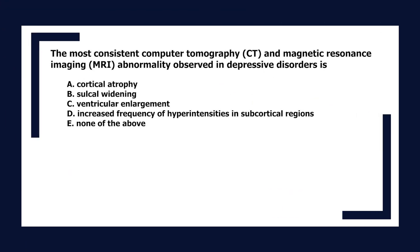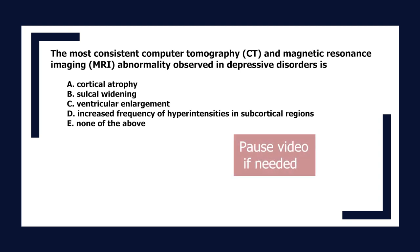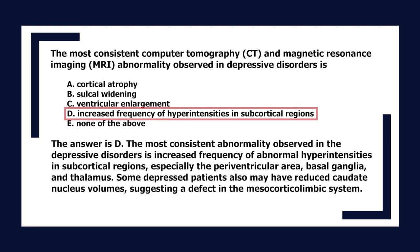The most consistent CT and MRI abnormality observed in depressive disorders is: A. Cortical atrophy, B. Sulcal widening, C. Ventricular enlargement, D. Increased frequency of hyperintensities in subcortical regions, E. None of the above. The answer is D. The most consistent abnormality is increased frequency of abnormal hyperintensities in subcortical regions, especially the periventricular area, basal ganglia, and thalamus.